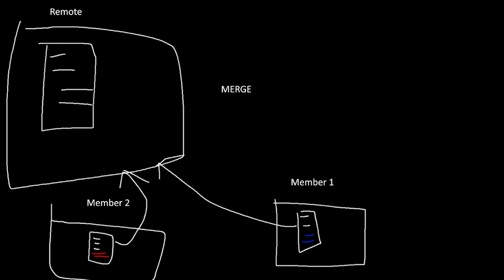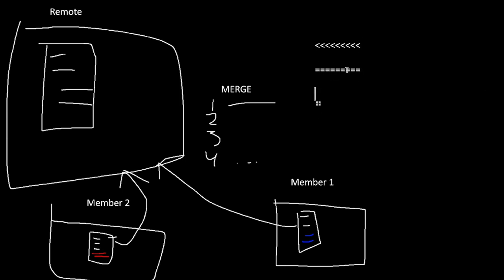So the way a merge works is if the files differ, it first checks the line numbers — 1, 2, 3, 4, and so on. And if line 1 does not match line 1 on the other side, then it puts a merge conflict marker. A merge conflict marker looks like this — it puts it in the file.